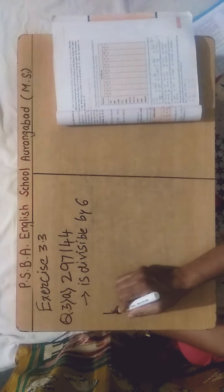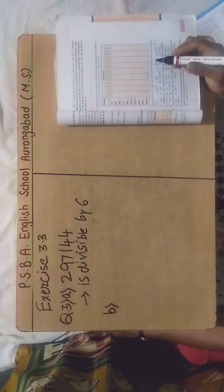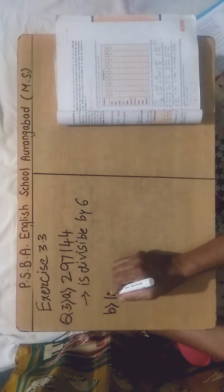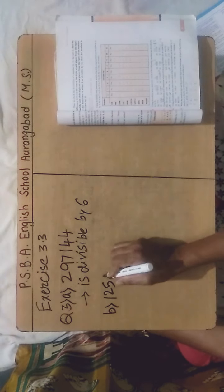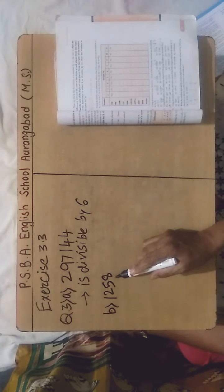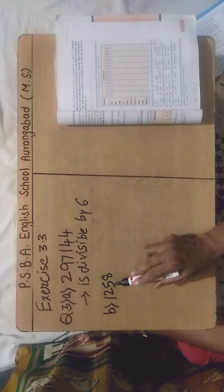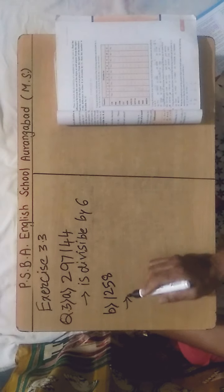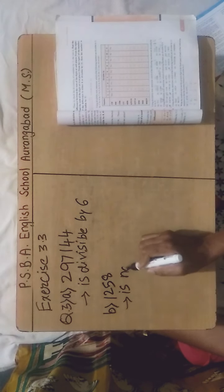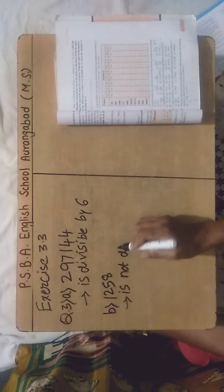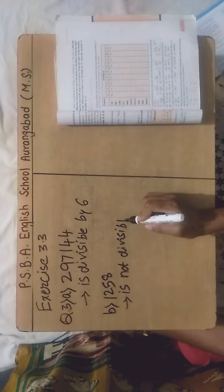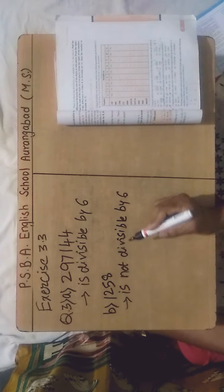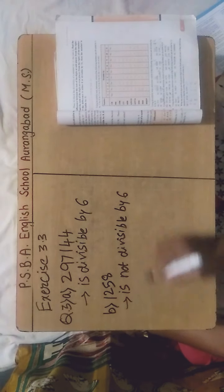Now sub-question B — the same method we have to follow for all the sums. The number is 1,258. It is having 8 at its ones place, so it is divisible by 2. The sum of digits: 8+5+2+1 = 16, which is not divisible by 3. Therefore the above number is not divisible by 6, as it is divisible by 2 but not divisible by 3.